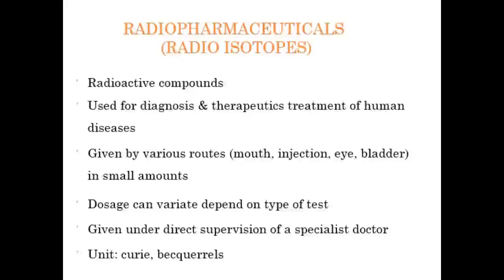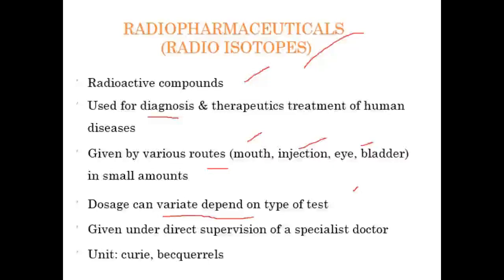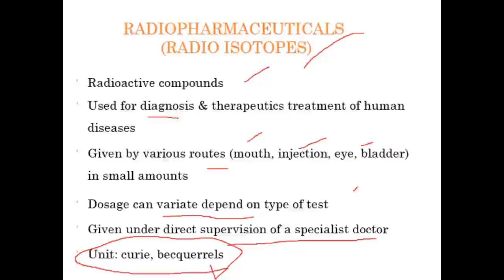Here I would like to mention radiopharmaceuticals — the radio isotopes — although they are not part of our syllabus. I specifically mention them because they are used mainly for diagnostic purposes. Radiopharmaceuticals are radioactive compounds. They can be injected by various routes — for example, orally, by injection, eye, or bladder — in small amounts. The doses of radiopharmaceuticals vary depending on the type of test. They are used under the direct supervision of a specialized doctor. The units of radiopharmaceuticals, as you must have read in your first year course, are the Curie and the Becquerel.